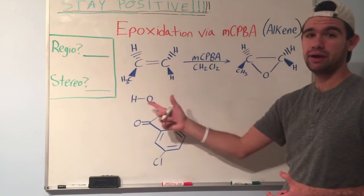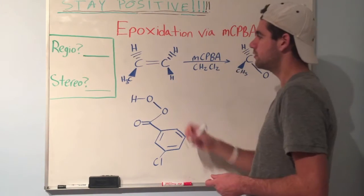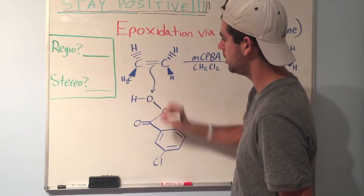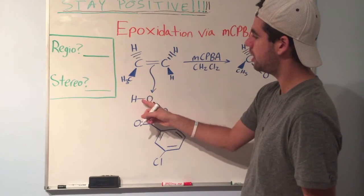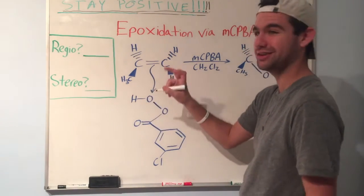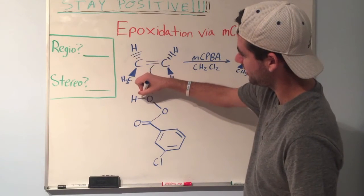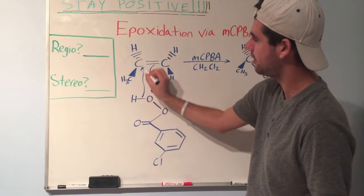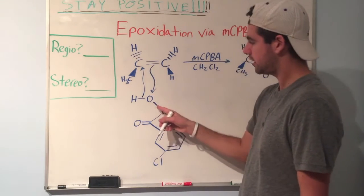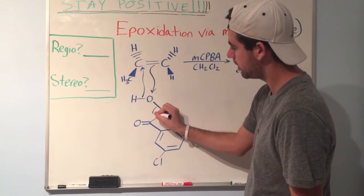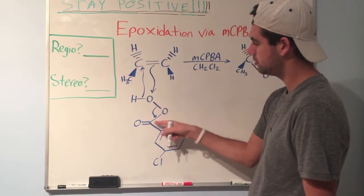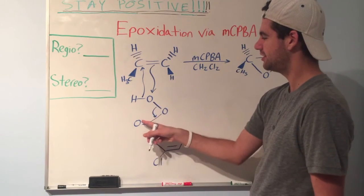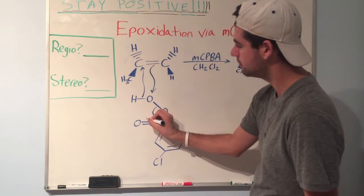So let's just go over the mechanism — how these two interact to form an epoxide. First things first, you're going to draw an arrow from the pi bond to this oxygen right here. As this O-H bond attacks this carbon right here, you're going to draw an arrow from that bond to the carbon. Next, you're going to collapse this O-O bond by moving an arrow from that bond to this bond. And then you're going to grab this hydrogen from the pi bond in the ketone.